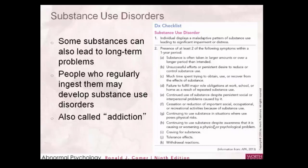In general, we're looking at someone using large amounts of a substance, having difficulty stopping, putting significant time, effort, and money into obtaining it or recovering from its effects, and experiencing relationship problems, work problems, or other social issues because of their use. Remember our D's: distress, dysfunction, danger, and deviance — though deviance is tricky because it involves social norms, and different people have different ideas about what constitutes appropriate substance use behavior.